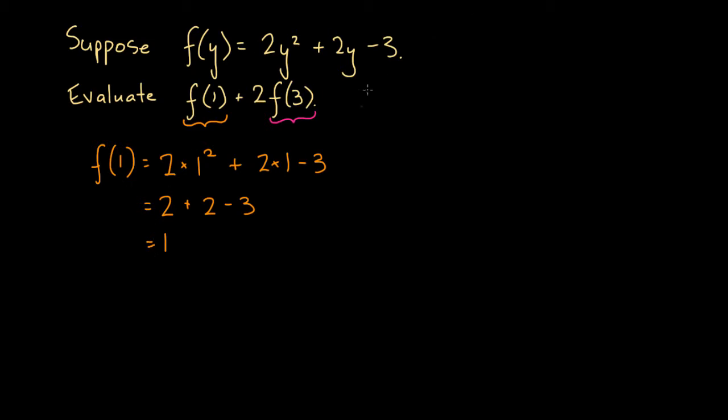Let's now consider the value of f of 3. In the same way, whenever we see y, we're going to substitute that y value for 3. So we'll say 2 times 3 squared plus 2 times 3 minus 3. Let's evaluate this. So here we're going to get 2 times 3 squared, 3 times 3 is 9, plus 2 times 3, that's 6, minus 3.